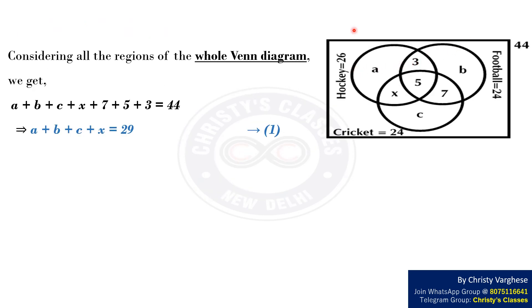Considering all the regions of the whole Venn diagram, we get A plus B plus C plus X plus 7 plus 5 plus 3 equals 44. This implies that A plus B plus C plus X equals 29. Let this be equation 1.